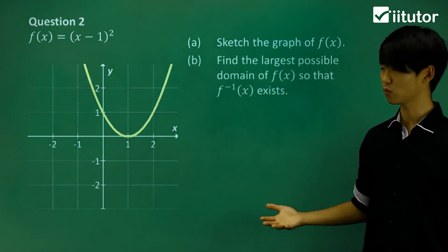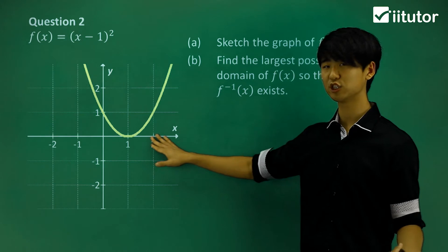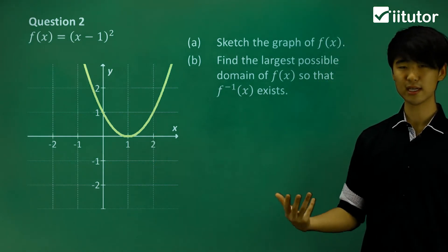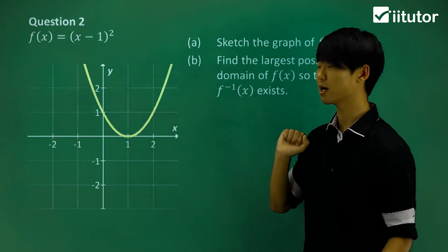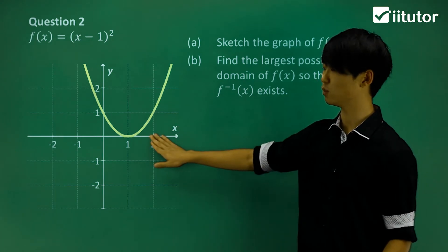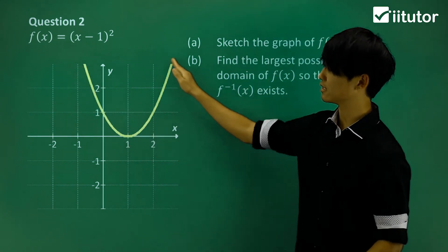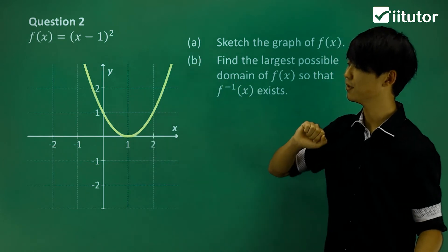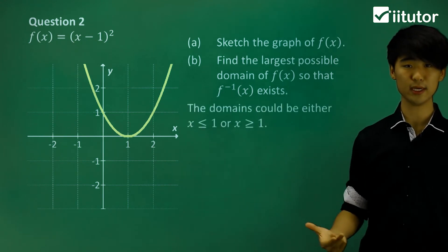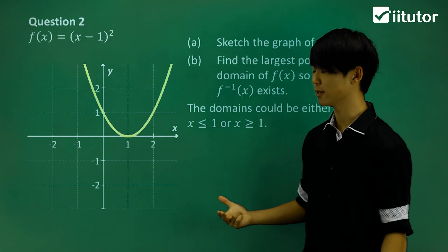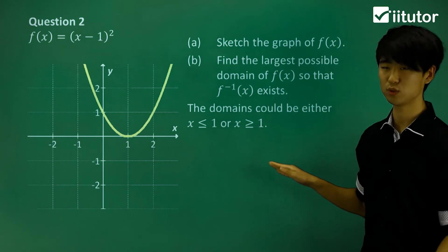In part B, a similar question asks me to find the largest possible domain of this function so that its inverse exists. We need to make this 1-to-1, because currently it's many-to-1 and has no inverse. The vertex is at x = 1, so we take only one half of the graph: either x < 1 (the left half) or x ≥ 1 (the right half).